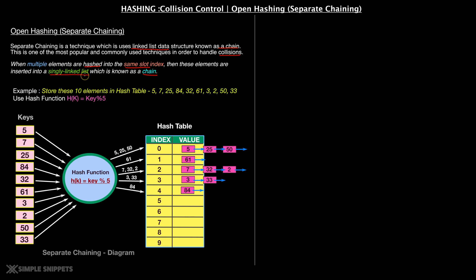To visually show you, you can see in the diagram. The example is we have to store 10 elements in the hash table. The elements are 5, 7, 25, 84, 32, and so on. The hash function h(k) is key mod 5. So 5 mod 5 gives 0 — it goes at index position 0. You can see this is a singly linked list structure. The first value stored is the head pointer of a singly linked list which points to the next item. Initially, 5 goes at the 0 position. Then 7 mod 5 gives 2, so 7 is stored at index position 2.